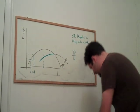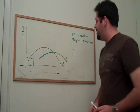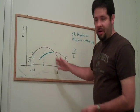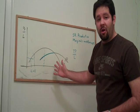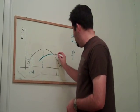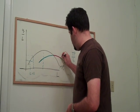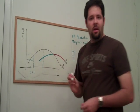When marginal product is below the average product, as it drops down here, way past the point of diminishing marginal returns, we get a decreasing average product of labor.